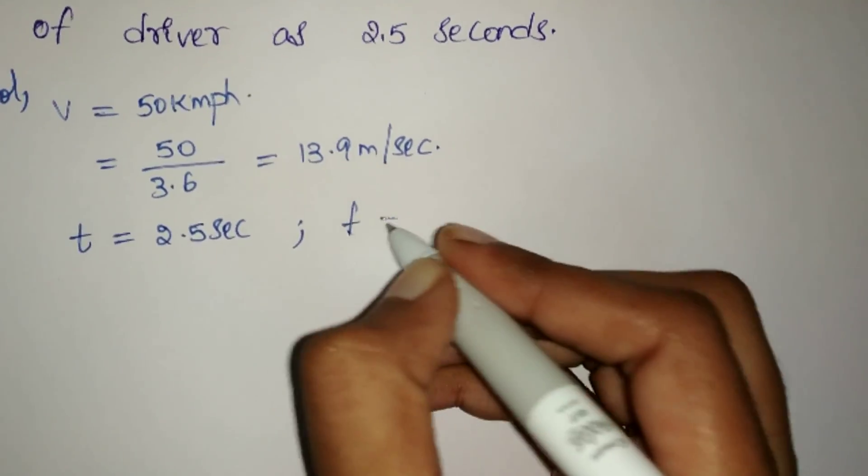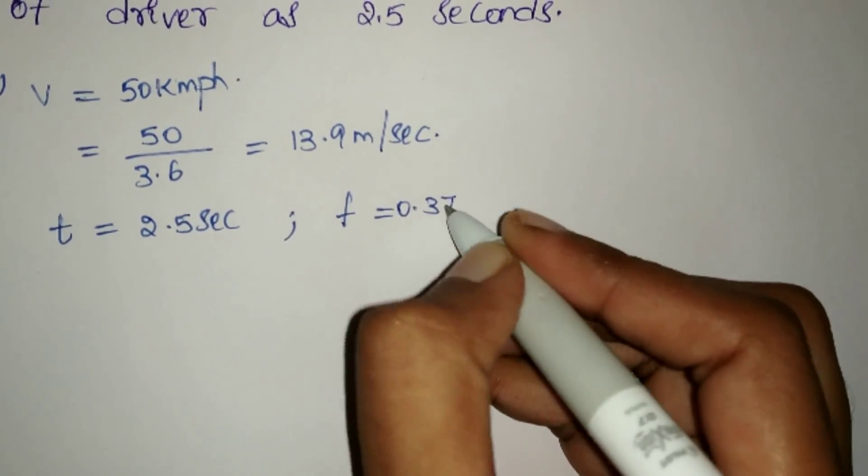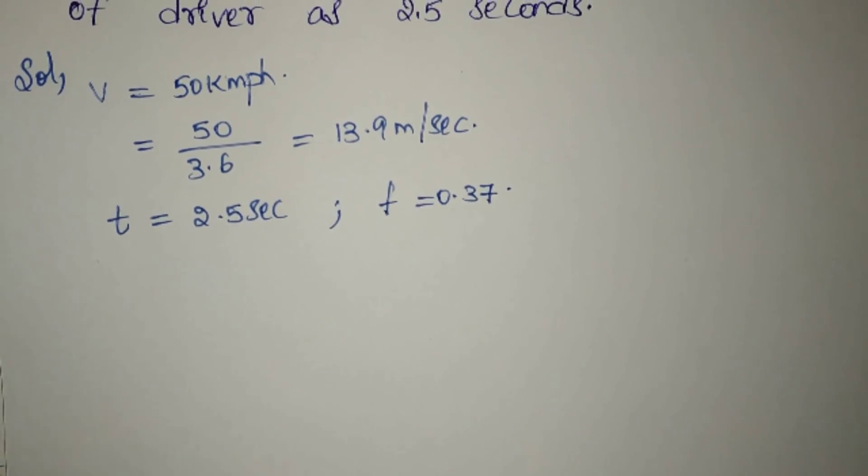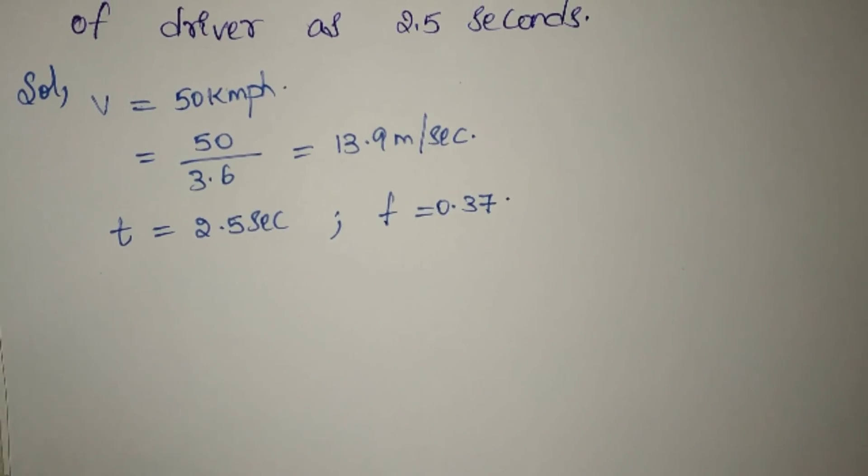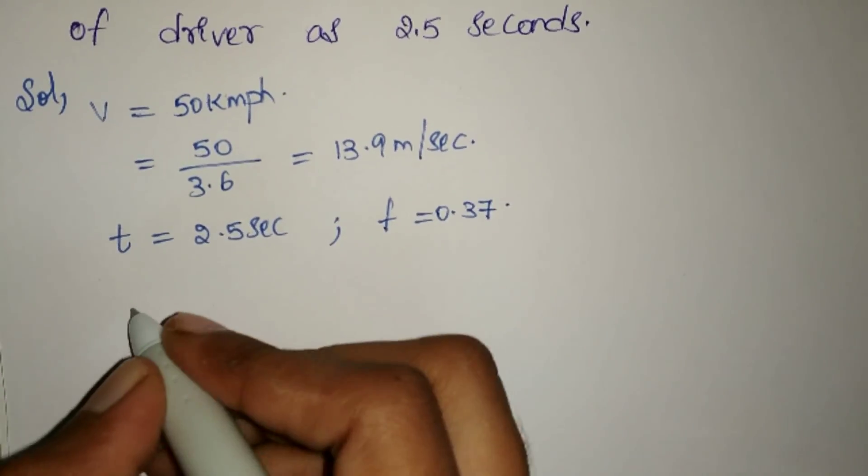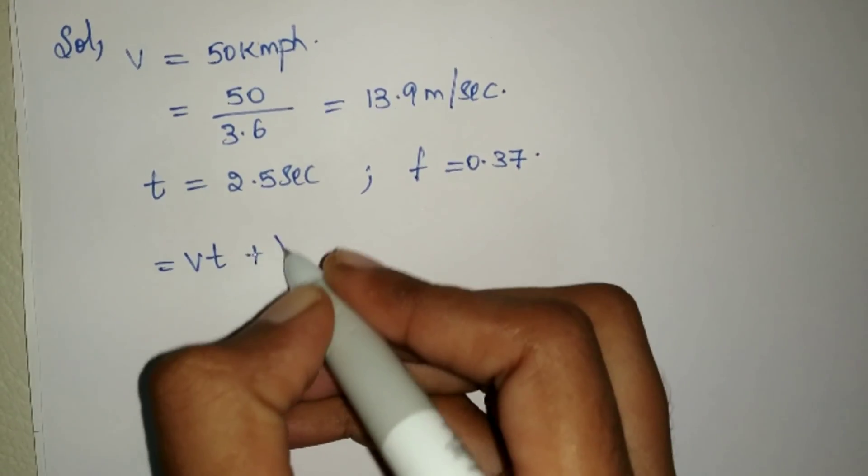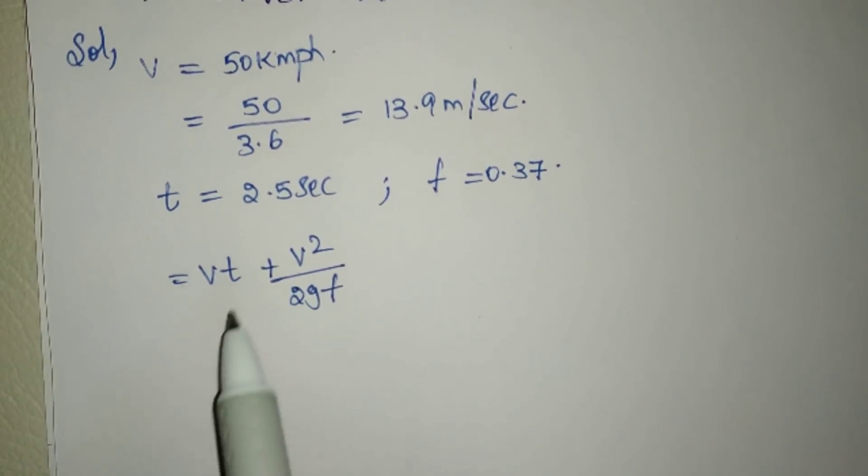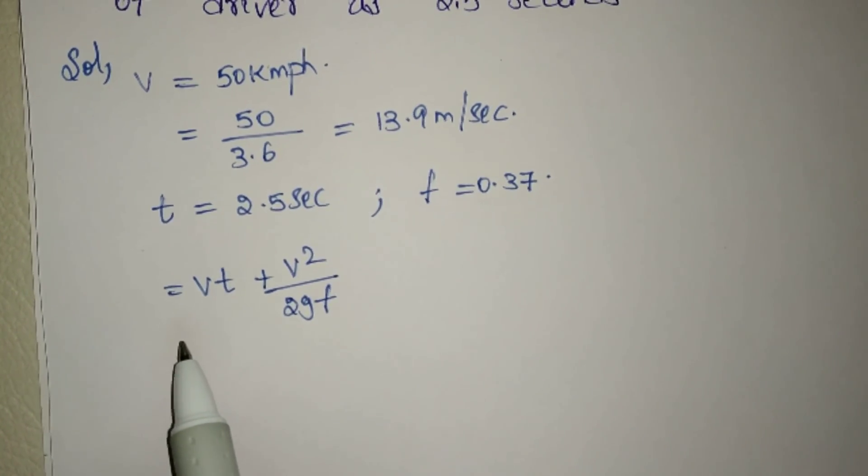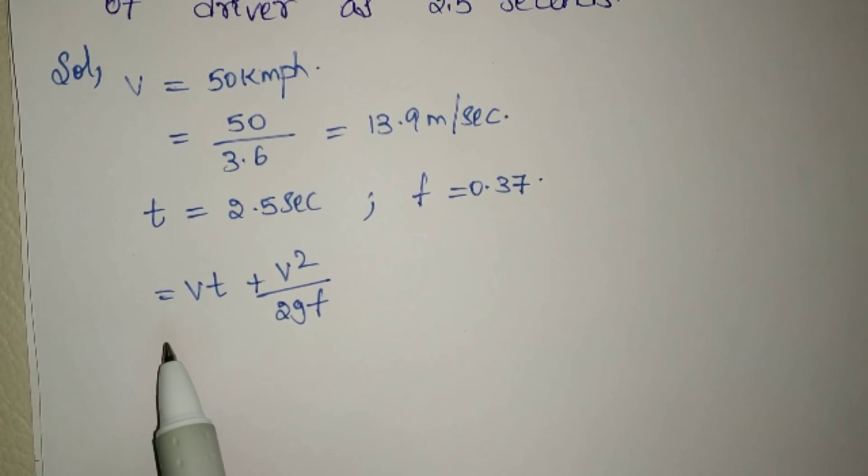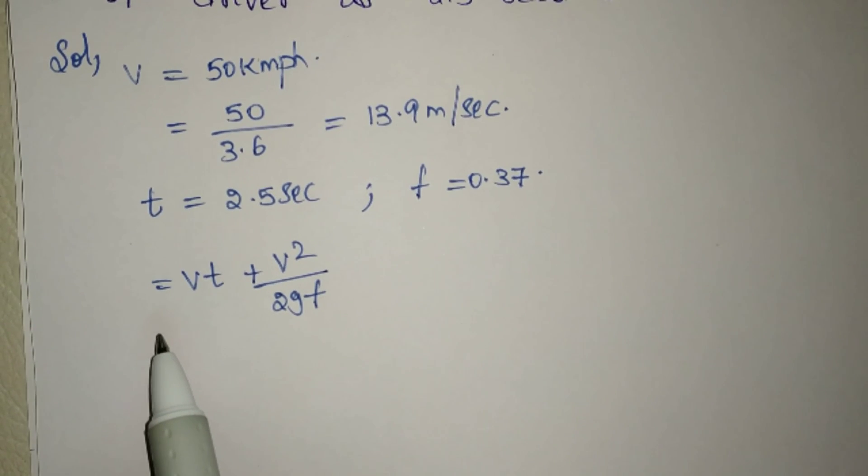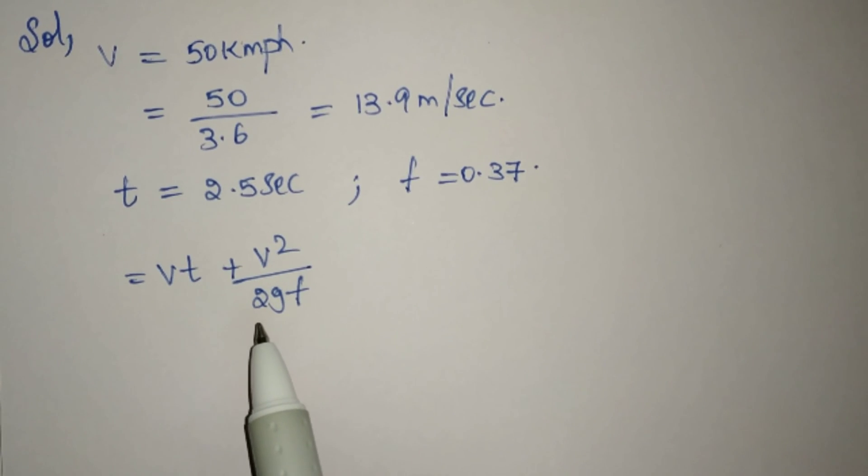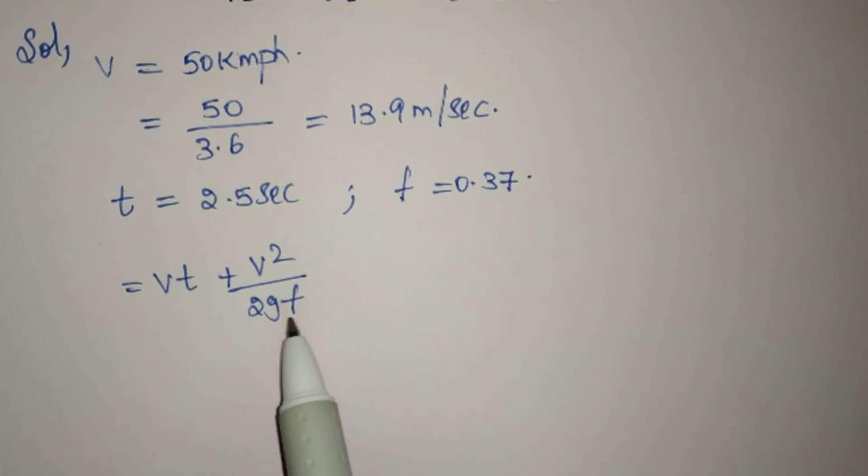To calculate stopping sight distance on level road stretch, the equation will be VT plus V squared by 2Gμ. Here VT is the lag distance, the distance covered when you take some time to react. G is gravitational force, 9.8, and V squared by 2Gμ will be braking distance.